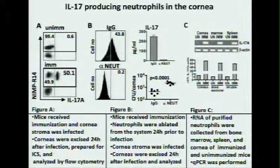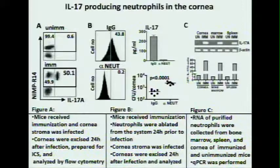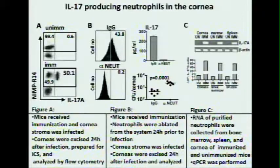To finally confirm that neutrophils were producing IL-17, RNA was extracted from immunized and unimmunized mice. We purified neutrophils from the cornea, bone marrow, and spleen, then ran RT-PCR. The delta fold change of the CT score showed that in immunized mice, neutrophils from the cornea, bone marrow, and spleen exhibit approximately an 80-fold increase in IL-17 mRNA expression. This was confirmed by agarose gel, and RNA concentrations were also confirmed. So indeed, the neutrophil is producing IL-17, which is a unique situation.